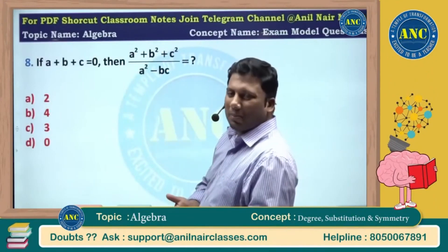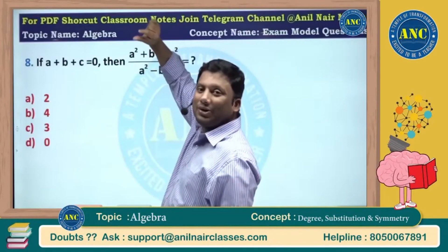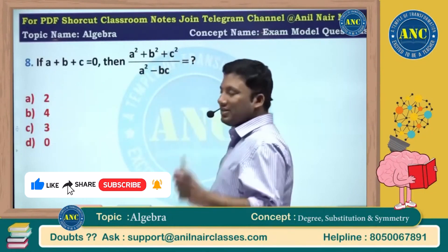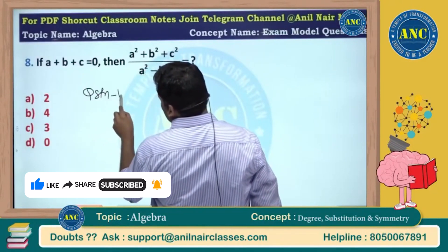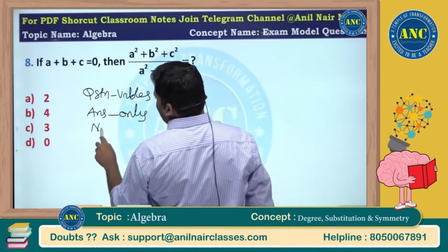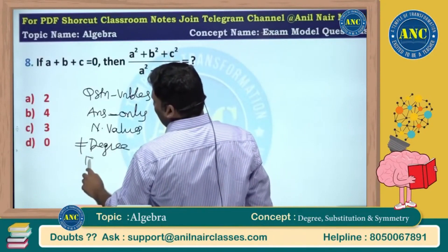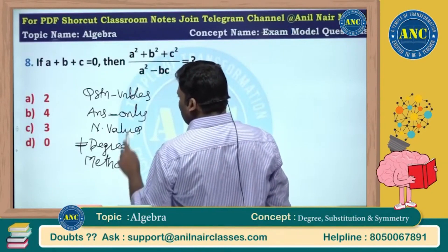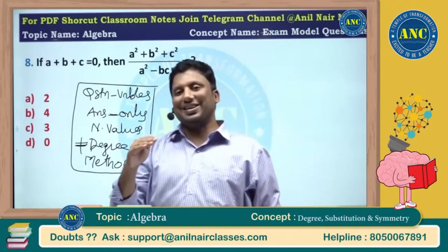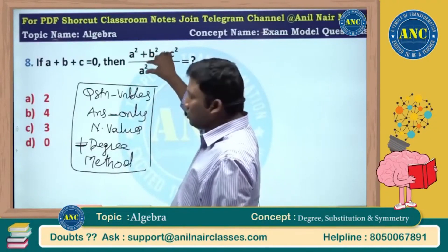The problem with the degree method is this: here the degree is 2, here the degree is 2, so the final degree of numerator and denominator will be 0. Always remember — if the question contains variables but the answer contains only numerical values, the degree method cannot be used. That is the demerit of the degree method.